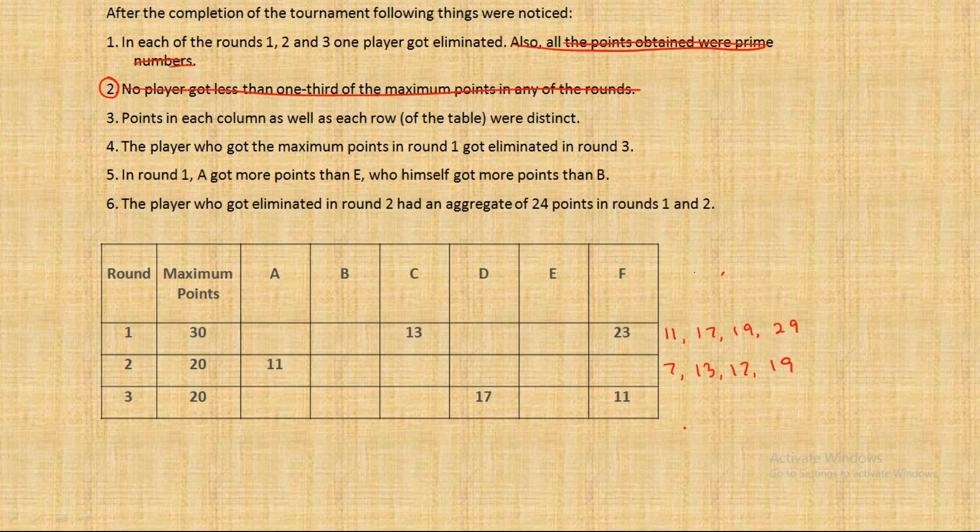So this we understood that one player got eliminated after each round. Points in each column and each row are distinct which makes it a pseudo Sudoku kind of situation that whichever number is written, it won't be repeated in that row or column.